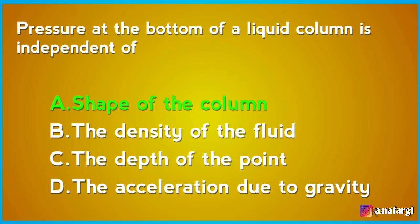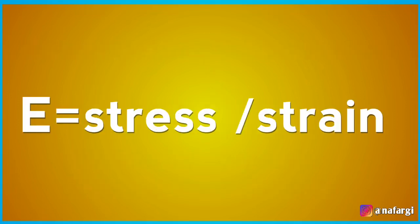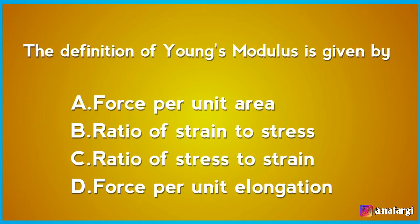The definition of Young's modulus is given by: A force per unit area, B ratio of strain to stress, C ratio of stress to strain, D force per unit elongation. Young's modulus is defined as the ratio of stress to strain. Force per unit elongation is not the correct definition. The answer is C.